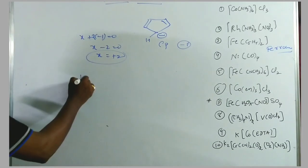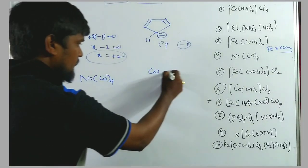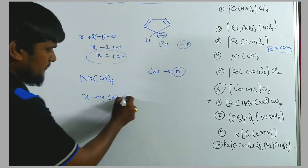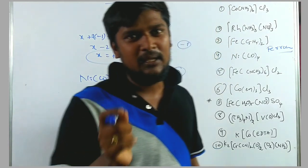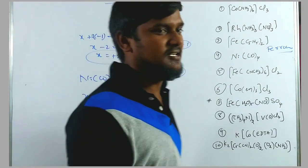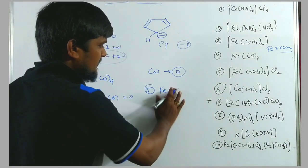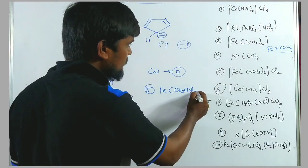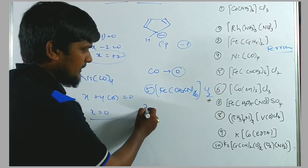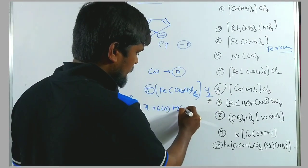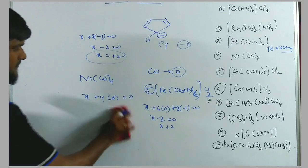Fourth example: [Ni(CO)₄]. All carbonyl is neutral entity. So: X + 4(0) = 0, giving X = 0. Note that all metal carbonyls have zero oxidation state. Fifth example: [Fe(CH₃CN)₆]Cl₂. Acetonitrile is a neutral entity. So: X + 6(0) + 2(−1) = 0, giving X − 2 = 0, X = +2.